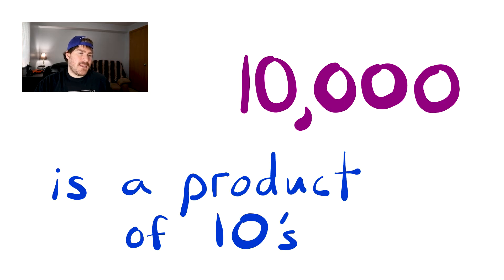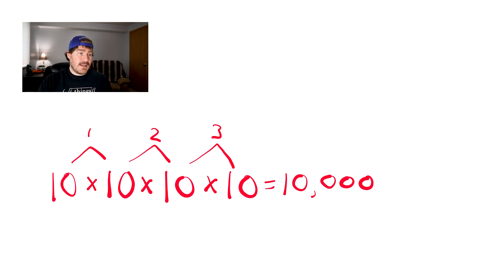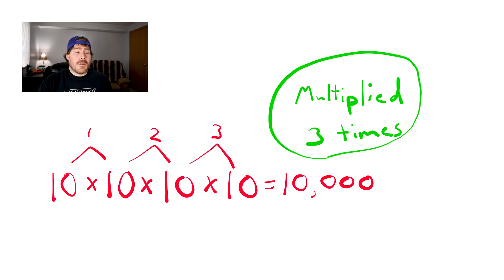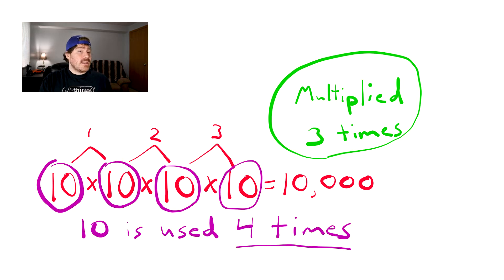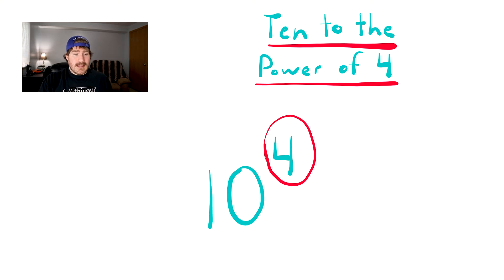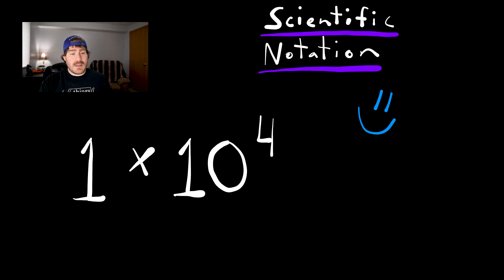You may remember working with powers of 10, but we'll recap real quick. The number 10,000 is a product of 10s — we can multiply 10 by itself a certain number of times to come up with 10,000. To demonstrate this, we'll multiply 10 by itself three times. You'll notice that doing this involves using the number 10 four times. We call this 10 to the power of 4 using an exponent, which simply means we are multiplying with 10 four times. The proper way to express 10,000 in scientific notation would be 1 times 10 to the power of 4.